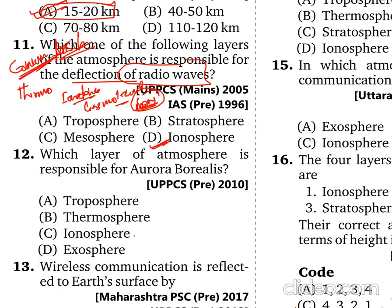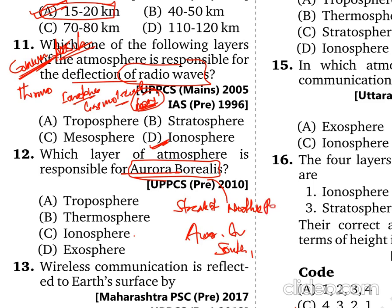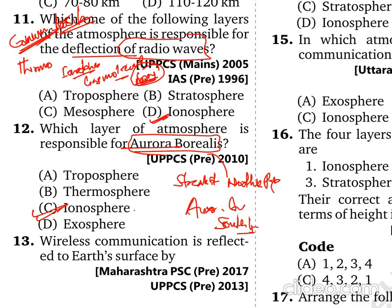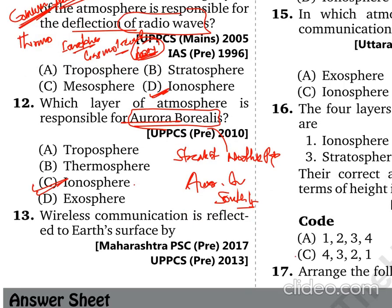The layer responsible for Aurora Borealis is the Ionosphere. Aurora Borealis is a streak of light visible in the Northern Hemisphere, while Aurora Australis is visible in the Southern Hemisphere near the southern pole. It is the Ionosphere which is responsible for the visibility of these phenomena. Aurora is basically an incredible light display caused by the collision between electrically charged particles released from the Sun when they enter the Earth's atmosphere.